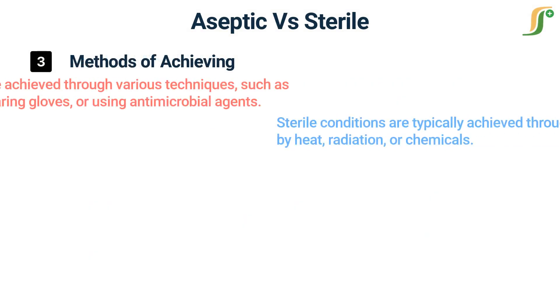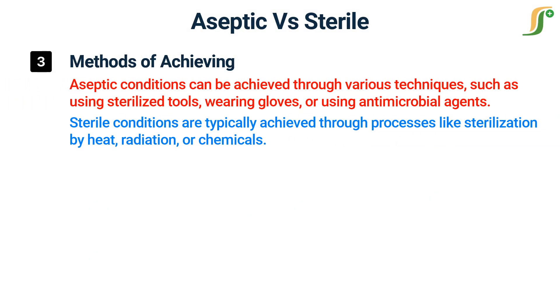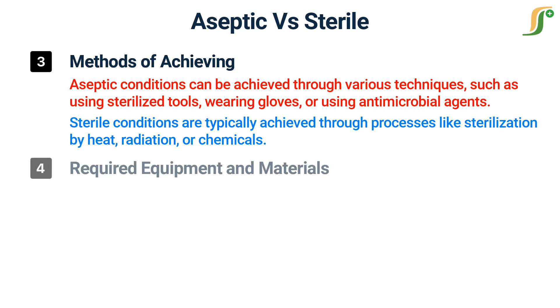Methods of achieving. Aseptic conditions can be achieved through various techniques, such as using sterilized tools, wearing gloves, or using antimicrobial agents. Sterile conditions are typically achieved through processes like sterilization by heat, radiation, or chemicals.